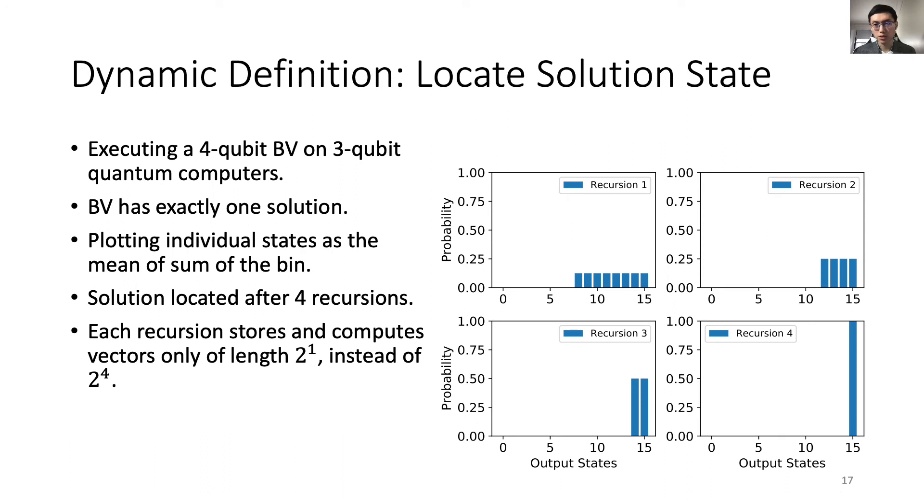Let's see an example of using DD to locate solution states. The figure shows executing a 4-qubit BV circuit on 3-qubit quantum computers. BV has exactly one solution. The figure plots the individual states as the mean of the sum of the bin therein. The first recursion concludes that all states starting with 0 have a combined probability of 0, and all states starting with 1 have a combined probability of 1. The solution state is located after 4 recursions. Each recursion stores and computes probability vectors of length 2^1 instead of 2^4.